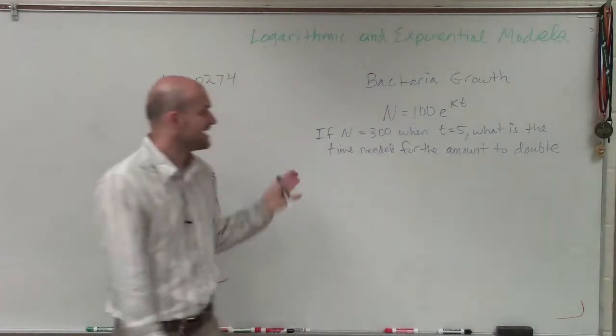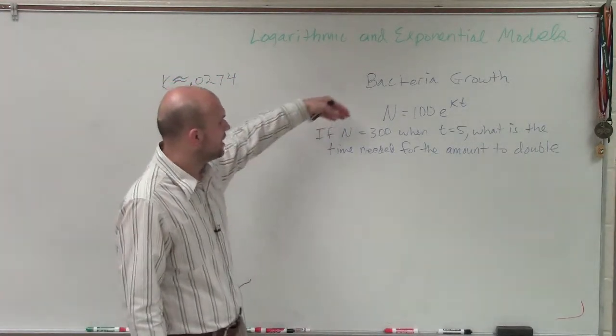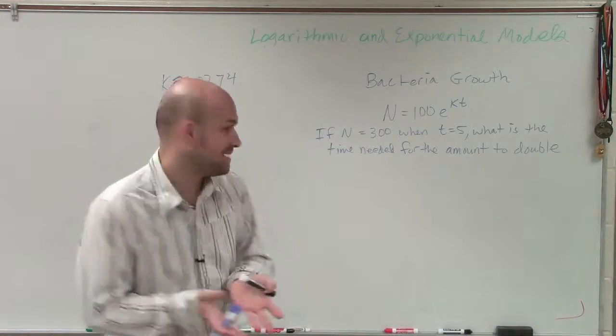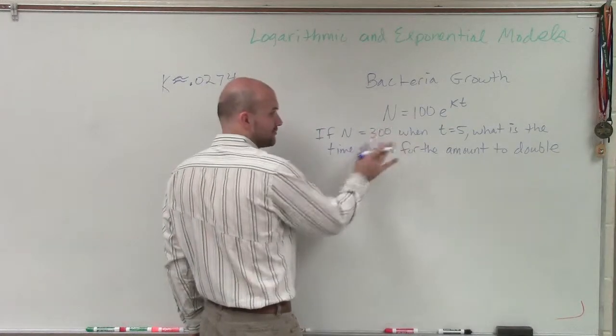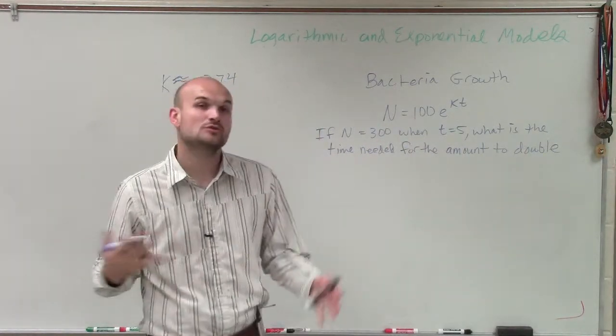OK, welcome. So what we have here is n equals 100e to the kt. And what they're asking us is if n is going to be the amount of bacteria that we have, and n is going to be our initial amount. And what they say is, the amount of bacteria we have is equal to 300 after five years, what is the time needed for our amount to double?